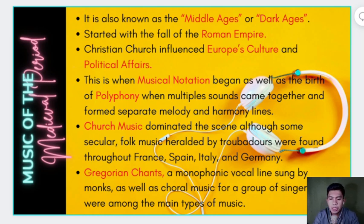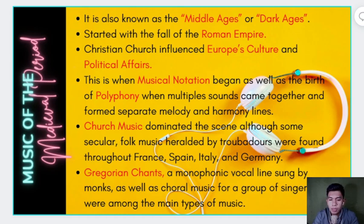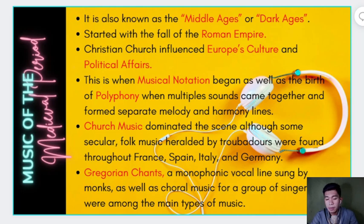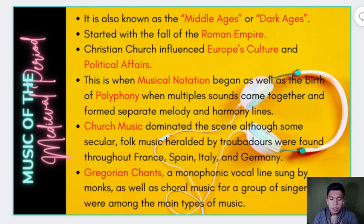The Gregorian chant is a monophonic vocal line. Earlier we mentioned polyphony, which means multiple sounds. Monophonic, when we say 'mono,' means one — so monophonic means one sound. It is sung by monks, as well as choral music for a group of singers. The monks during that time who sang Gregorian chant were a group of men — that was the major group that sang inside the church. The difference from polyphony is that in monophonic music, even if many people are singing, they all sing in unison — the same sound.